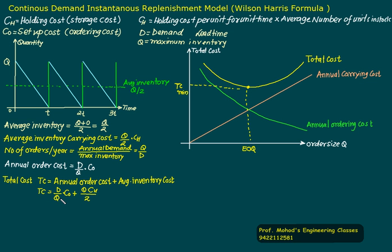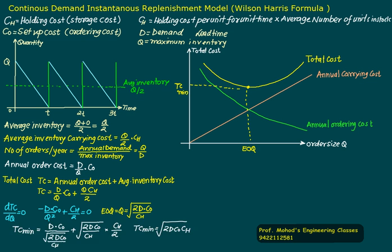For minimum cost, we differentiate this with respect to Q and equate to 0. Derivative of DCO by Q: Q is variable, DCO is constant. Derivative of 1 by Q is minus Q squared. Derivative of Q is 1, so CH by 2. Solving this for Q squared, the economic order quantity equals square root of 2DCO upon CH.